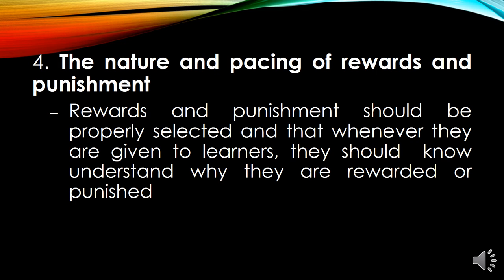The fourth aspect is the nature and pacing of rewards and punishment. We all like rewards — they motivate us. Rewards and punishment should be properly selected, and whenever they are given to learners, the students should know and understand why they are being rewarded or punished. Let your students understand why they receive rewards, and let them know what they did wrong to receive punishment. There must be a clear reason — not just because you feel like punishing them.